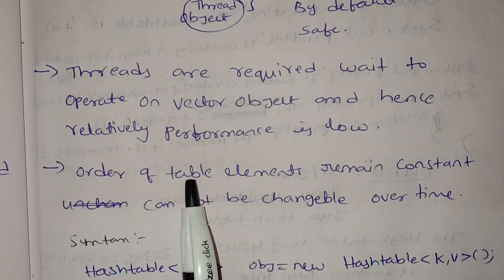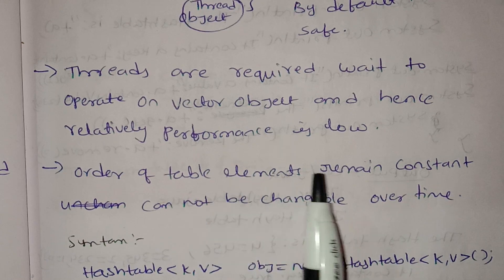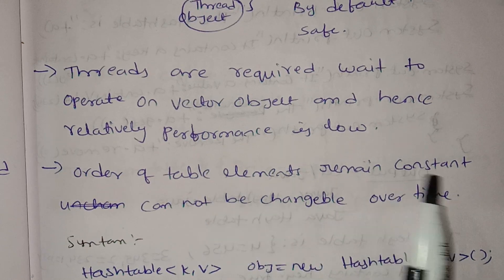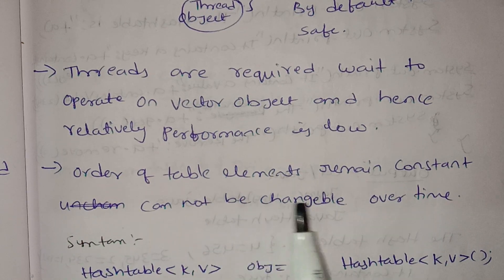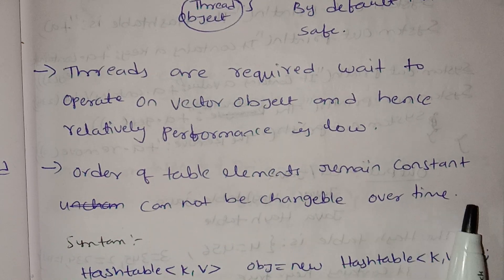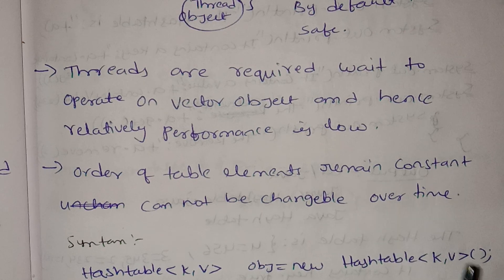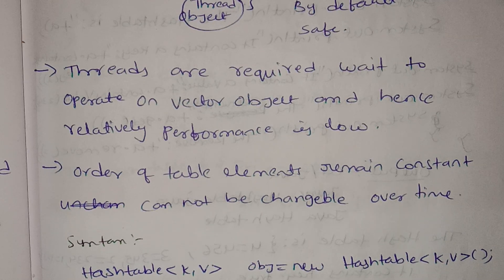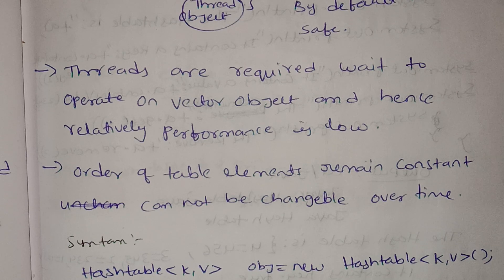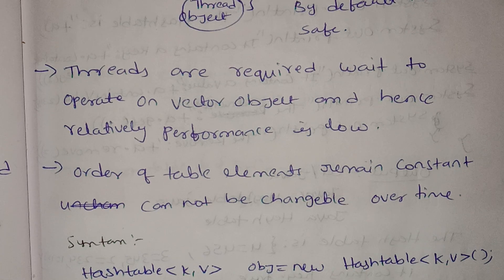The order of table elements remains constant. It cannot be changed over time. Even if we insert elements into the hash table, the order of elements will not change.